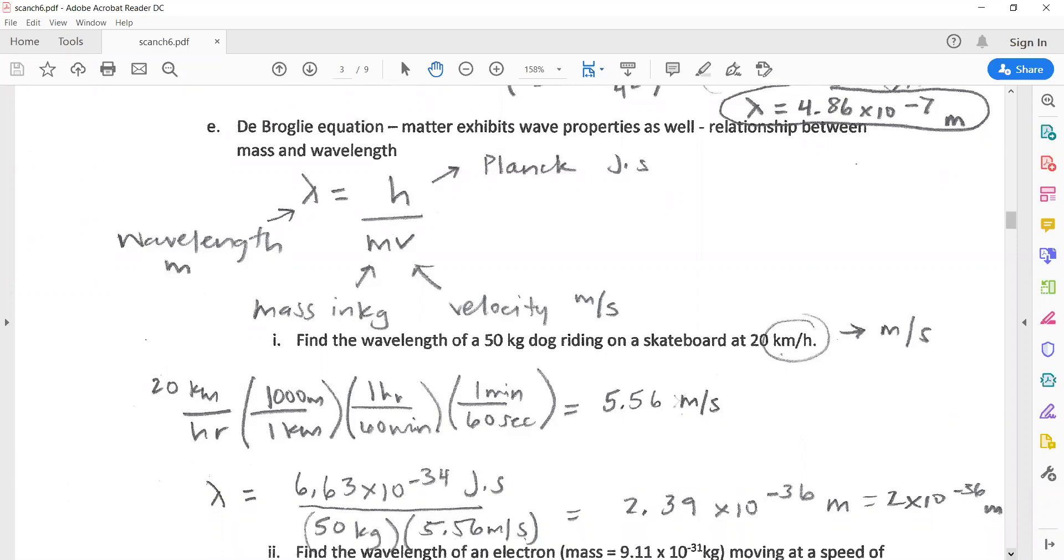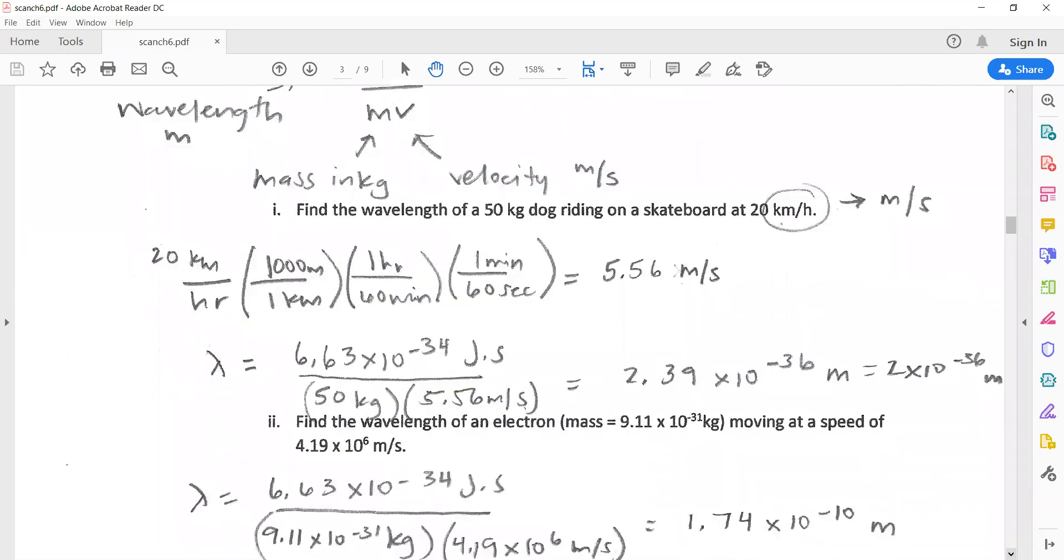Find the wavelength of a 50 kilogram dog riding a skateboard at 20 kilometers per hour. We've got to be careful about units. Mass in kilograms is already good, Planck's constant is good, but we have to convert the speed to meters per second. Kilometers per hour: kilometers goes on bottom, a thousand up top, hours on bottom, so bring hour to top, 60 minutes, one minute, 60 seconds. Multiplying everything on top divided by the bottom, we're left with meters per second. We can plug that velocity in and get the wavelength that dog would create. I ended up rounding it to one sig fig because the 20 and 50 only had one sig fig.